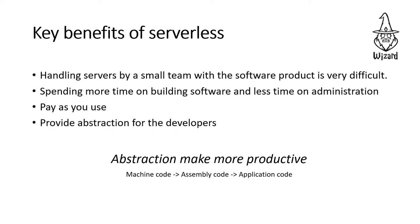Then pay as you go, and you can get a benefit. You can make developer abstractions — one example is: you can use machine code, then assembly code, then application code. Here is how you use the code.